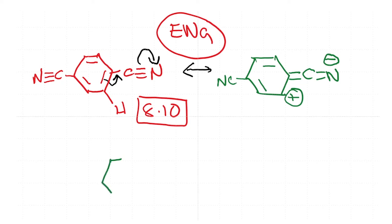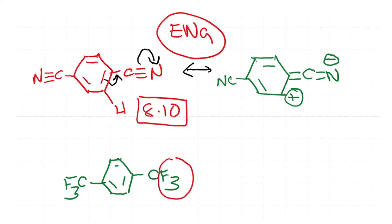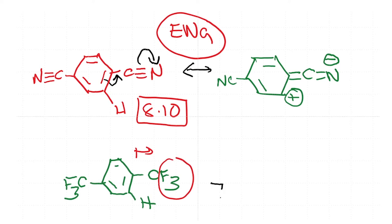The next example has CF3. Fluorine is highly electronegative and there is no possibility of a resonance based effect, so this is going to be completely an inductive effect. The chemical shift value of the hydrogen here is 7.78. This value is much greater when compared to benzene, so CF3 definitely has a significant effect.